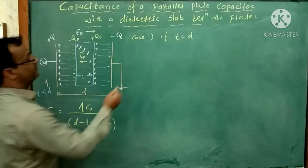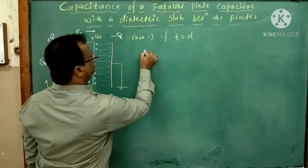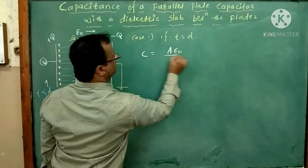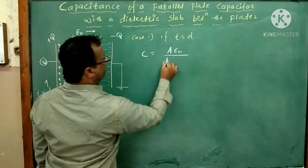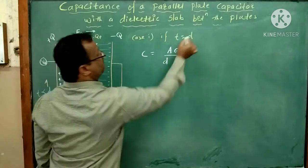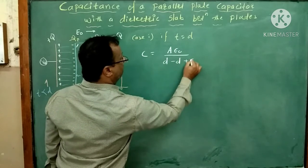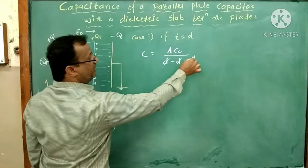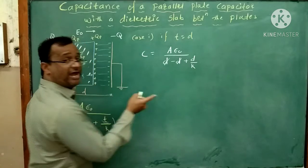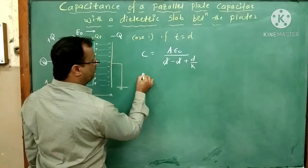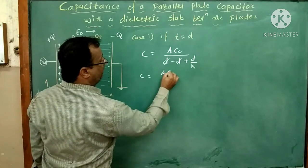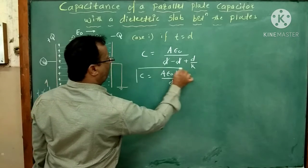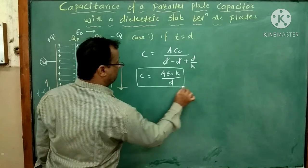We want to substitute this value. So C is equal to: A·ε₀ is as it is, D is as it is, but instead of T we substitute D. So we get D minus D, which cancels, leaving D upon K. But this K is at the denominator of the denominator, so it transfers to the numerator. So C is equal to A·ε₀·K upon D. This will be the formula of capacitance with dielectric.